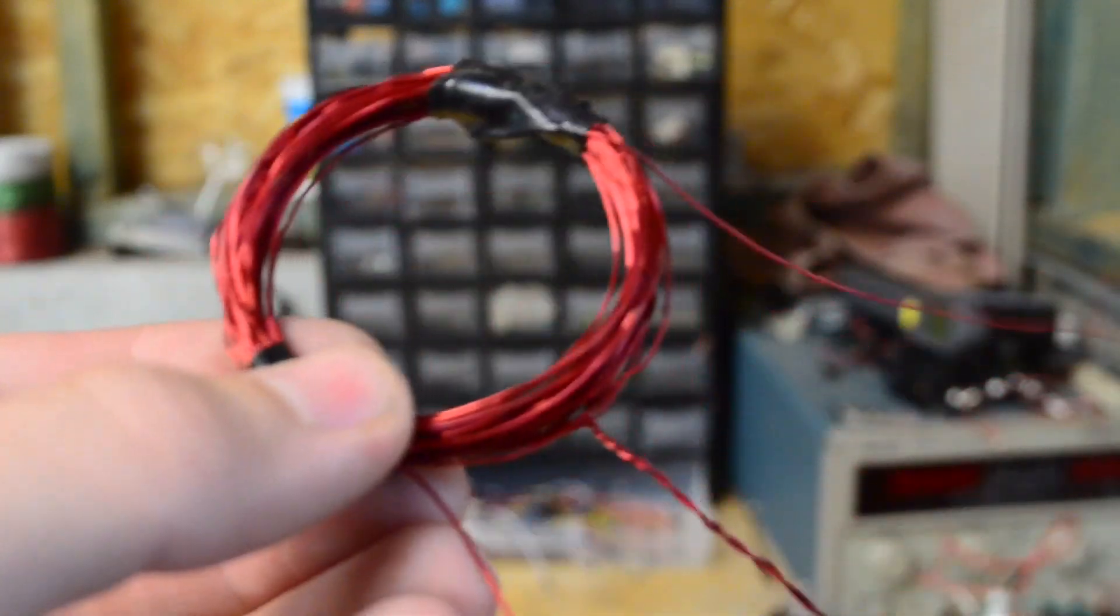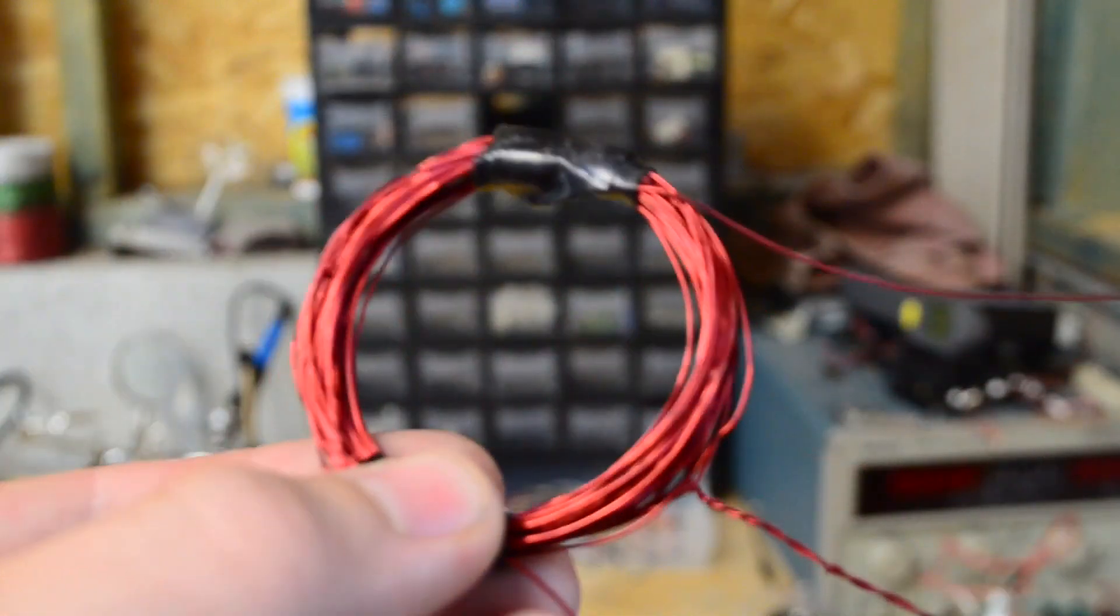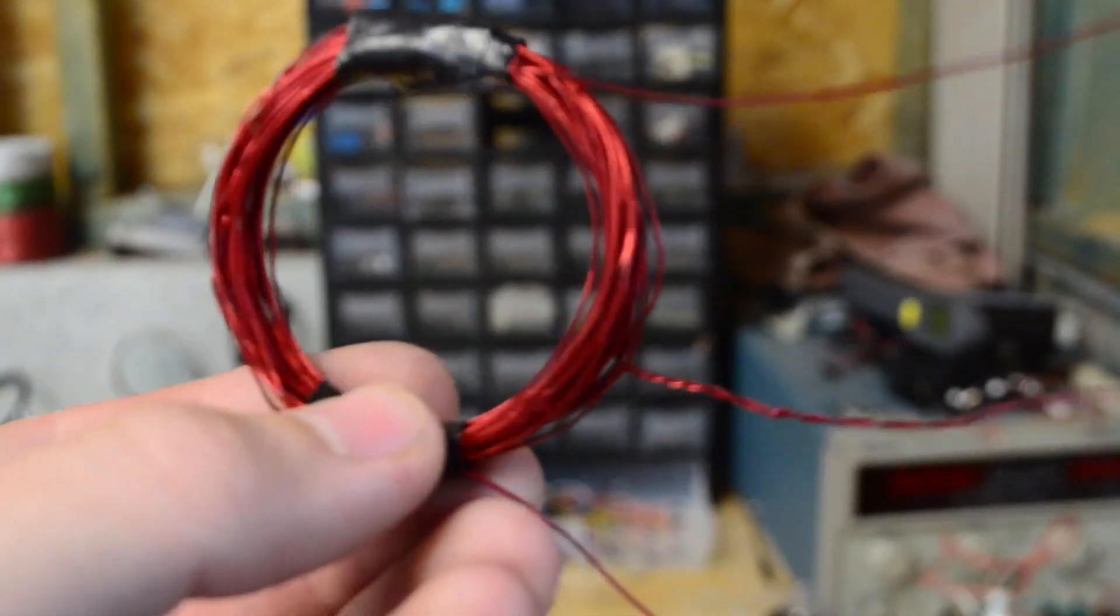The schematic shows another coil that's center tapped. So this is also 40 turns, however it's 20 turns and then I pulled out some wire and twisted it together and then 20 more turns. So 40 turns in total but center tapped.